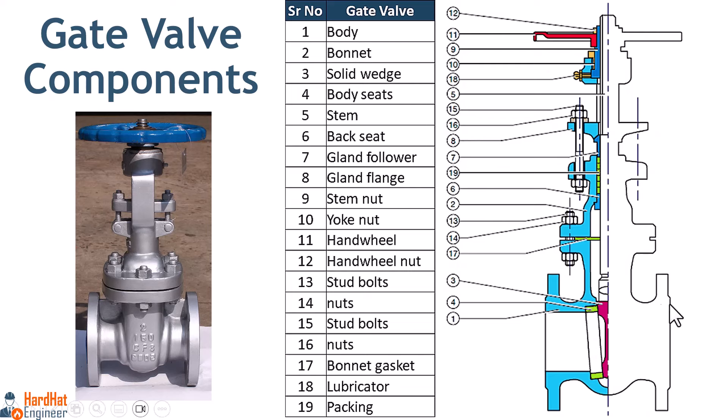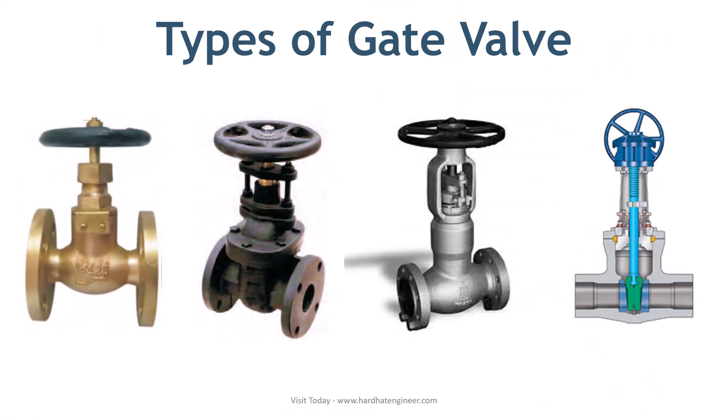Here you can see the cut section of the gate valve showing key components such as body, disc, stem, and other trim parts. Gate valves are used in almost all fluid services such as air, fuel gas, feed water, steam, lube oil, hydrocarbon, and almost any other services. Some special types are used in slurry and powder products, such as knife gate valves.